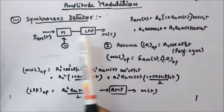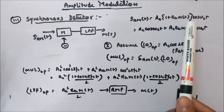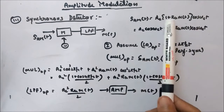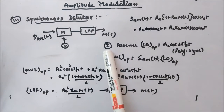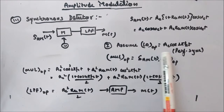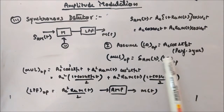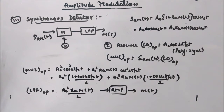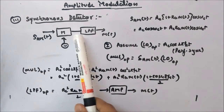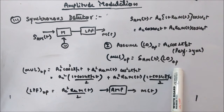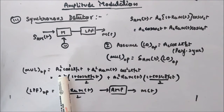Let's analyze the output of a synchronous detector. You have this circuit diagram. The signal s(t) = Ac[1 + ka·m(t)]cos(ωct). If you expand this, you get Ac·cos(ωct) plus Ac·ka·m(t)·cos(ωct). Now let's take the first case where the local oscillator output is Ac·cos(2π·fc·t), which is perfectly synchronized — no phase difference and the frequency is the same as transmitted. Your multiplier output will be s(t) multiplied by the local oscillator output.